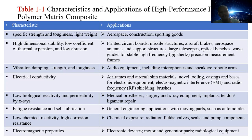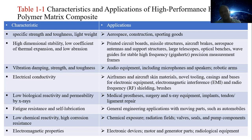Nanocomposites can replace human tissues. Another characteristic is fatigue resistance and self-lubricating properties, which motivate applications in general engineering with moving parts, such as automobile bodies and rotating components. Low chemical reactivity and high corrosion resistance is also a key characteristic, making this material suitable for chemical exposure environments, radiation fields, valves, seals, and pump components.